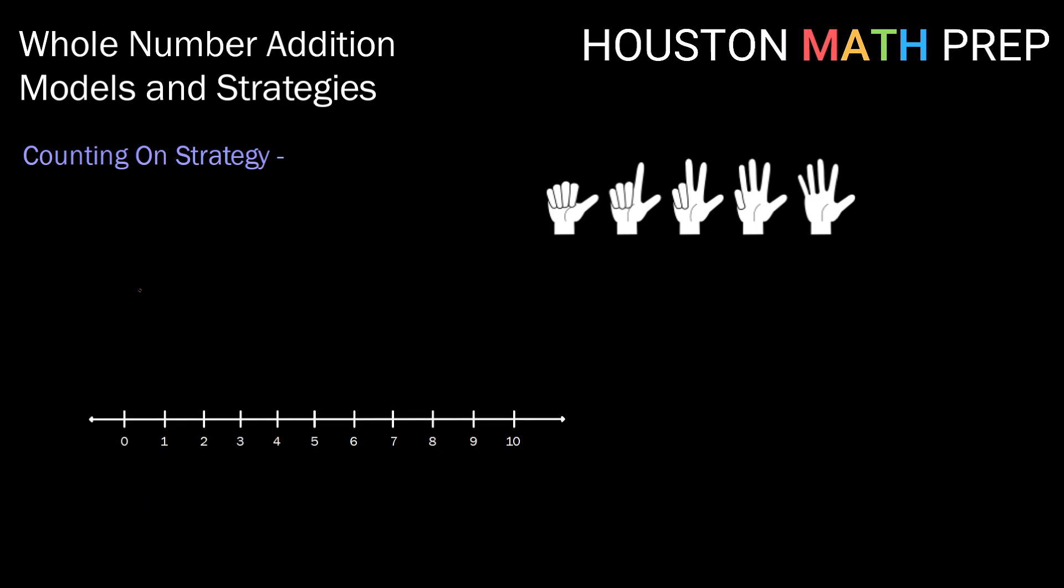But when we talk about addition the idea of counting on is the idea of starting at one number and counting from that number up to your total. So for example, if I want to model four plus seven, I would have students find the larger number starting at seven and count on from seven. So starting at seven either on a number line or on their fingers or maybe even out loud. And then I'm going to count on four more numbers.